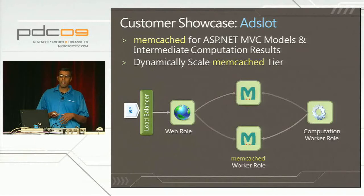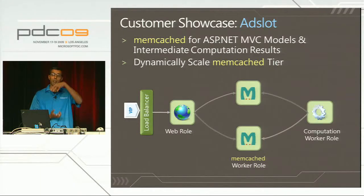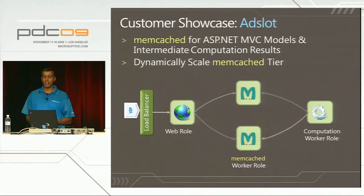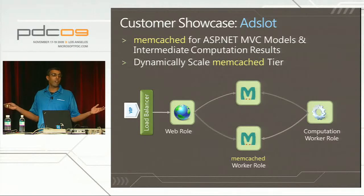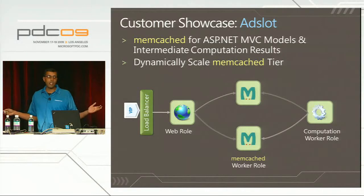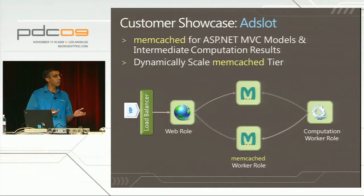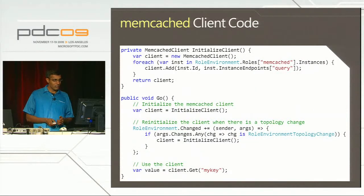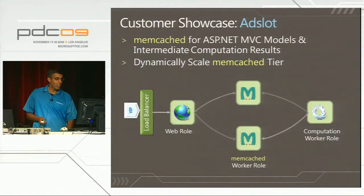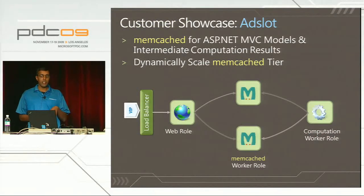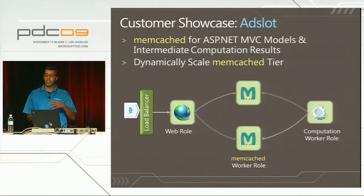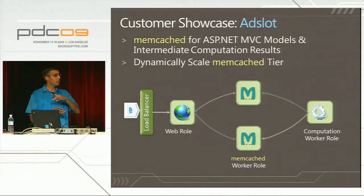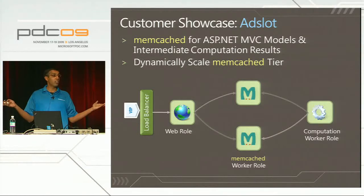When scaling the Memcached tier, the clients need to discover that new Memcached nodes have come up or gone down and adjust accordingly. Looking at the initialization code - there's really only one line specific to Windows Azure. Otherwise it's standard Memcached code. What it does is new up a Memcached client, enumerate all instances of Memcached running inside the service, and set up the client's connection table.